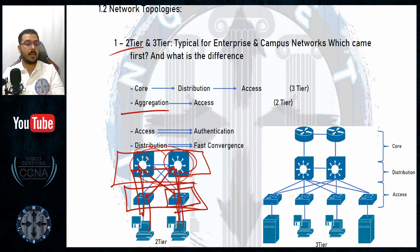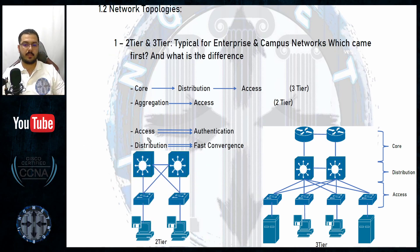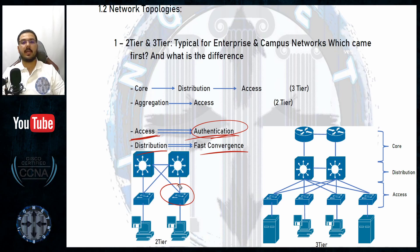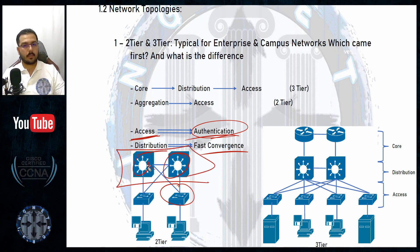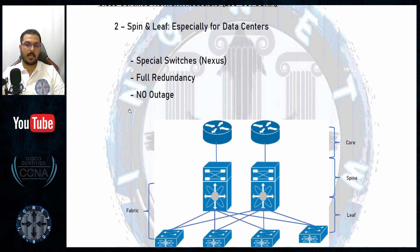Please be careful: design components and acronyms are sensitive. Distribution and core exist only in the three-tier design. Aggregation is used only in the two-tier design. An important distinction: the access layer is responsible for authentication — these switches decide, based on your device, username, or password, whether to allow or deny you access to the network. After authentication, the aggregation layer is responsible for fast convergence and connecting you to the internet and other network components.